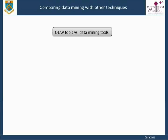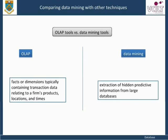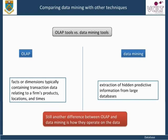OLAP deals with facts or dimensions typically containing transaction data relating to a firm's products, locations, and times. The methodology of data mining involves the extraction of hidden predictive information from large databases. Another difference between OLAP and data mining is how they operate on the data.